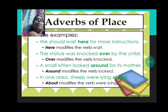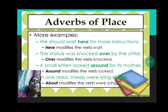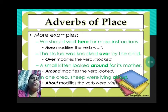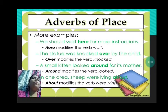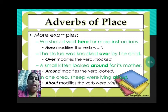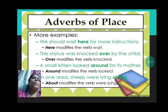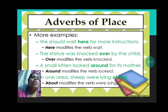Now, adverb of place with more examples. We should wait here for more instructions. 'Here' modifies the verb 'wait'. It tells more about the verb 'wait'. Where should we wait? We should wait here.